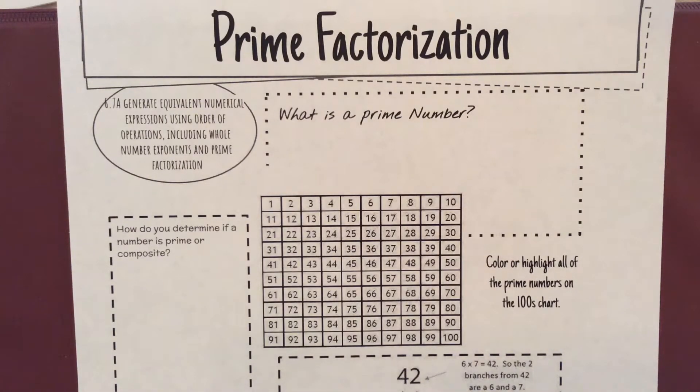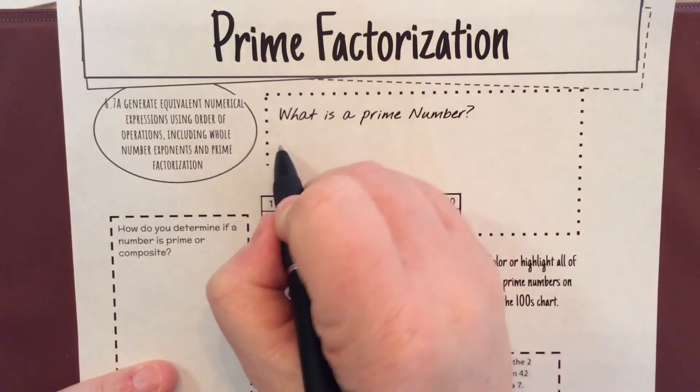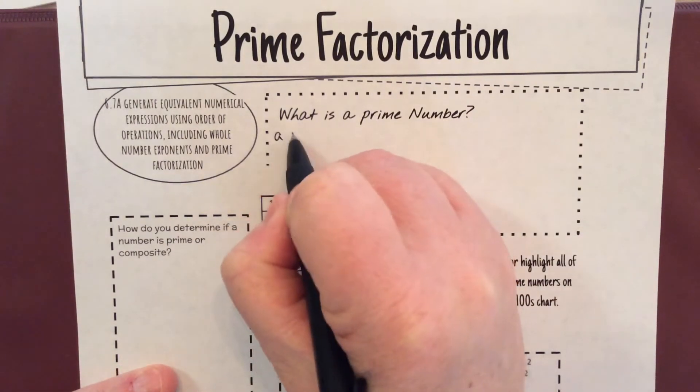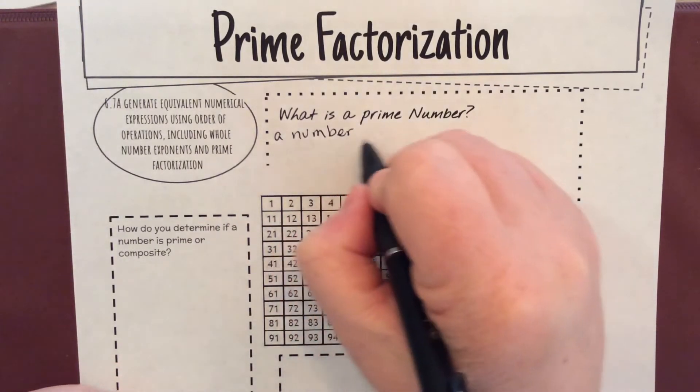Okay Rams, we are now on page 59 and 60 in your notes. We're going to work on prime factorization, and part of this goes back to what you've already learned in fifth grade. So, what is a prime number? Well, a prime number is a number whose only factors are one and itself.